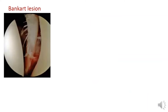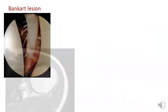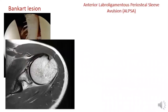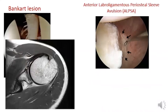Bankart lesion is avulsion of the anterior labral-ligamentous structures from the anterior inferior glenoid rim. This is often considered the essential lesion of anterior shoulder instability, with 90% of all anterior shoulder dislocations having associated Bankart lesions. ALPSA — anterior labral ligamentous periosteal sleeve avulsion — occurs in recurrent instability; the lesions heal on the medial aspect of the glenoid neck.